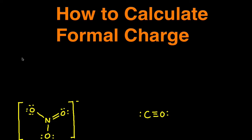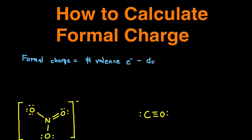All you have to do is follow this formula: formal charge equals the number of valence electrons minus the number of dots minus the number of lines. That's how you calculate formal charge.